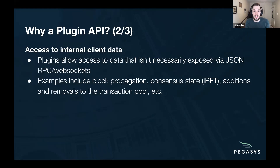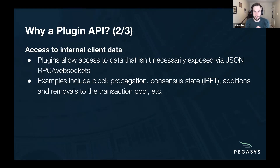Another reason the plugin API made a lot of sense is that it gives you access to internal client data that's not necessarily exposed through regular APIs like JSON-RPC, WebSockets, or even GraphQL. A couple of examples are block propagation, the consensus state within IBFT, and the additions and removal from the transaction pool. There's no JSON-RPC call for any of those things, but you can build a plugin that leverages that data and acts on it.